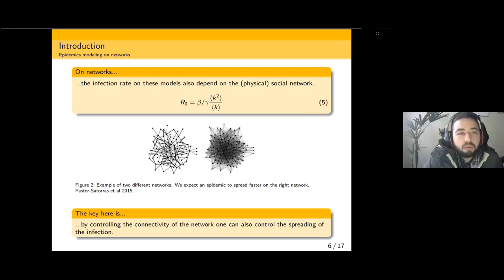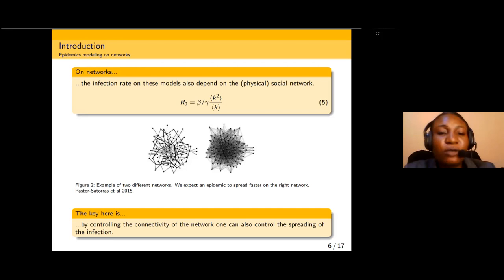The infection rate on networks depends on the physical or social network. R naught is equal to beta over gamma multiplied by k squared over k, where k is the probability of choosing a random node with k connections. From Figure 2, we can see an example of two different networks. We expect an epidemic to spread faster on the right network because they are closely connected—the nodes are closely knit in the right hand figure.